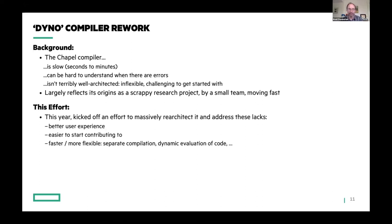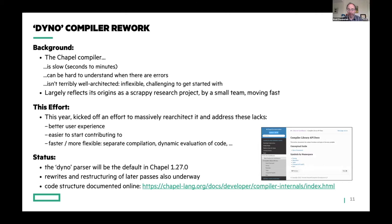The Dyno effort is essentially a massive re-architecting of the compiler in place to get a better user experience, make it easier to start contributing to the code base, and make the compiler faster and more flexible — supporting things like separate compilation, dynamically evaluating code, and other things you'd want from a modern compiler. In our release at the end of this month, the new Dyno parser and the new AST will become the default for the front end. We've also been doing a much better job documenting the code structure, with Doxygen docs generated online.